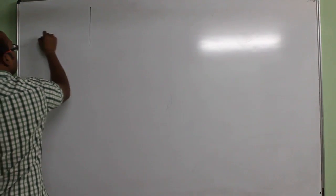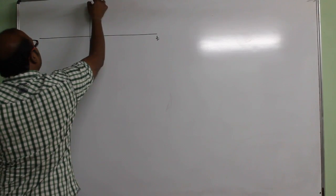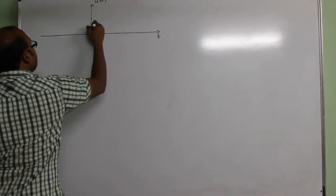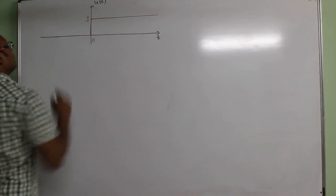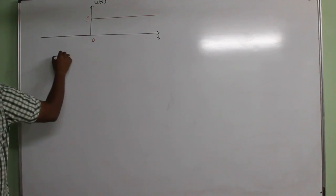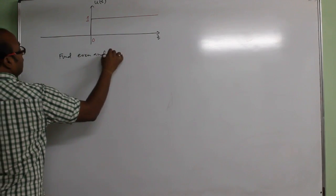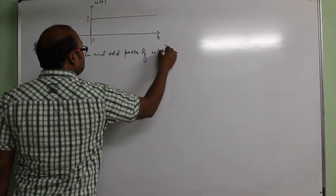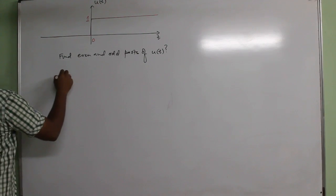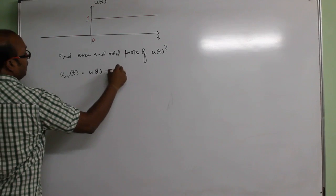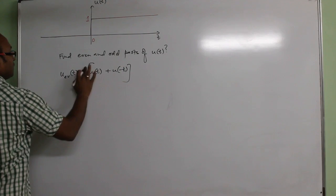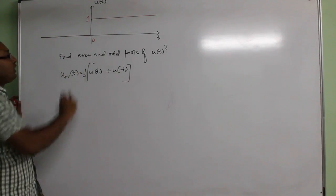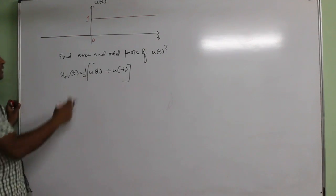For example, we have the unit step signal u(t). We have to find out the even and odd parts of u(t). We know that the even part of u(t) is half of u(t) plus u(-t). So to draw the even part of u(t), first we draw u(-t) since u(t) is already there, then we add u(t) and u(-t) and divide by 2.